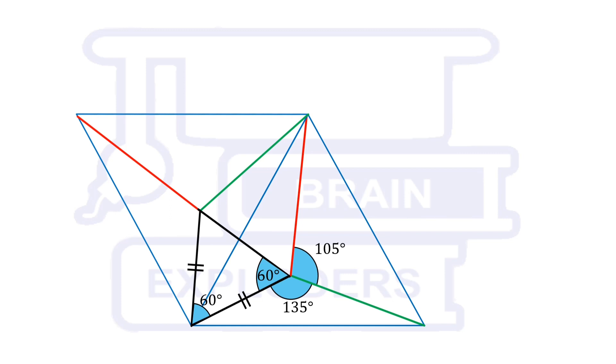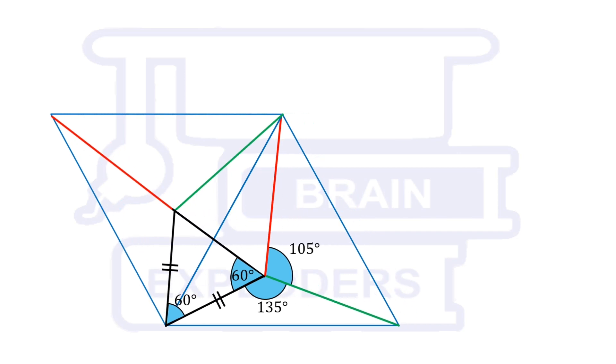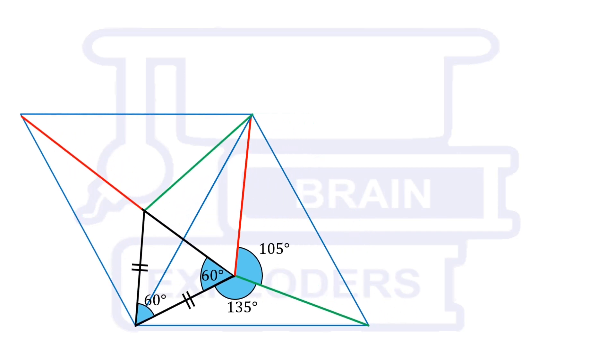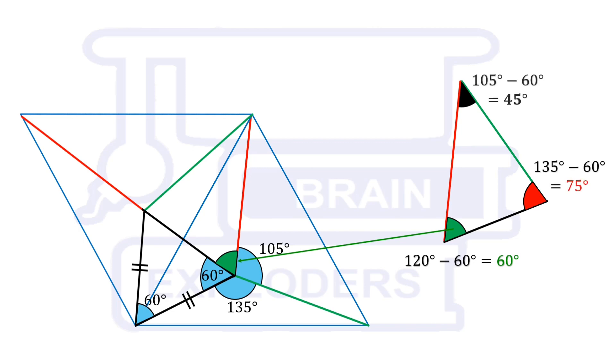On this triangle, another triangle is formed whose sides are red, black and green. This is the required triangle and now angle opposite to green side can easily be calculated equals to 120 minus 60 degrees. Similarly angle opposite to black and red sides are 105 minus 60 degrees and 135 minus 60 degrees respectively.